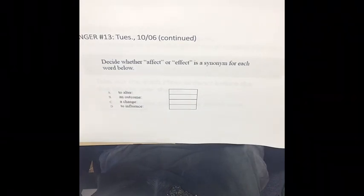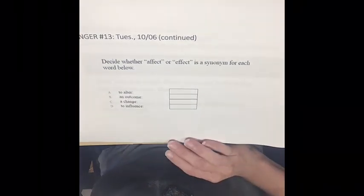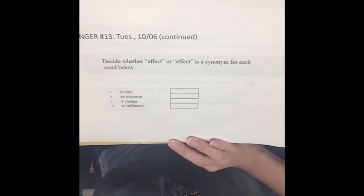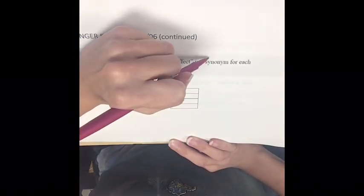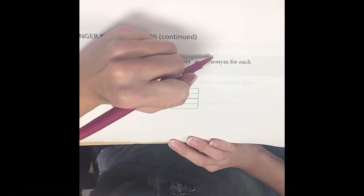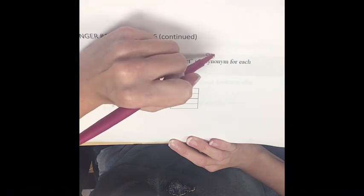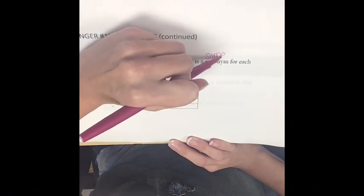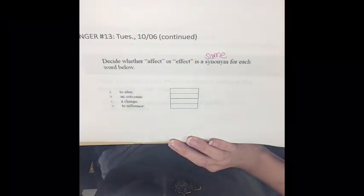Please check your answers from Tuesday. Decide whether affect with an A or effect with an E is a synonym — synonym means the same, antonym means the opposite — for each word below.